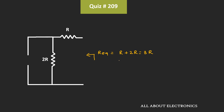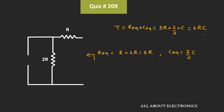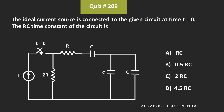That means here, the equivalent resistance is equal to 3R, while the equivalent capacitance C equivalent is equal to 2 by 3 times C. So, let's say the RC time constant of the circuit is T. Then, this RC time constant is equal to R equivalent times C equivalent, which is equal to 3R times 2 by 3 times C. That is equal to 2 times RC. So from this, we can say that for the given circuit, the RC time constant is equal to 2RC.